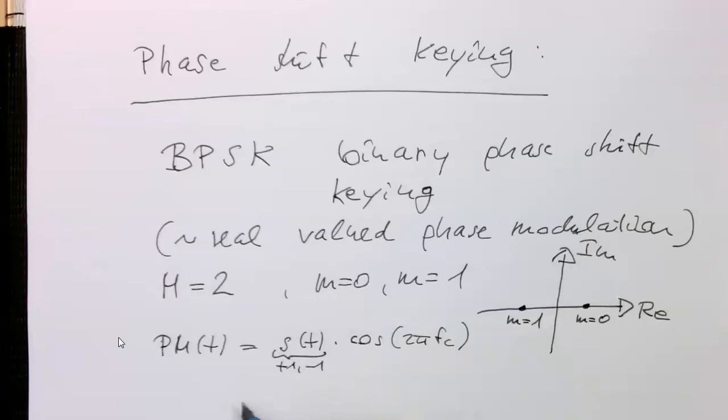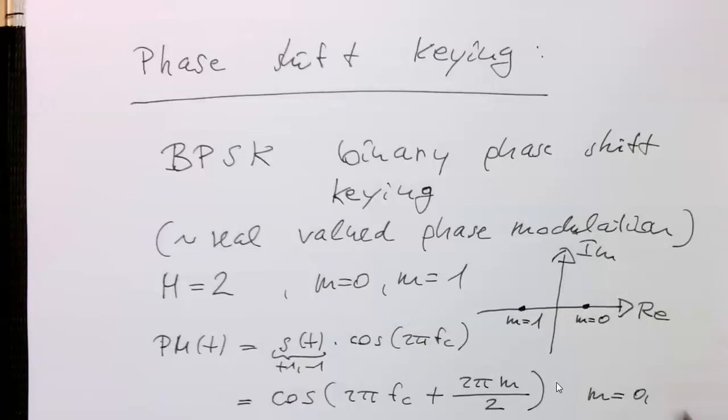Obviously, we could also write this down with a proper phase term. So we could also write cosine of 2 pi fc, and then we add something like 2 pi M divided by 2 just to have this with M equals 0 or 1.